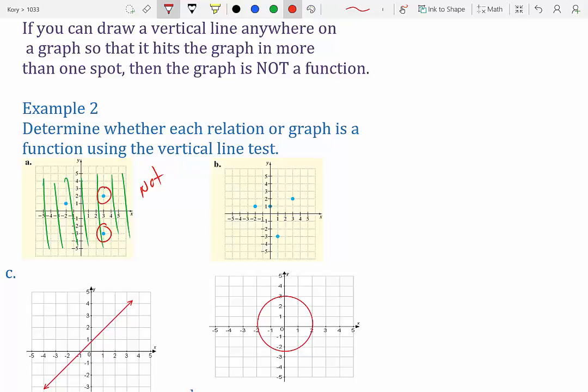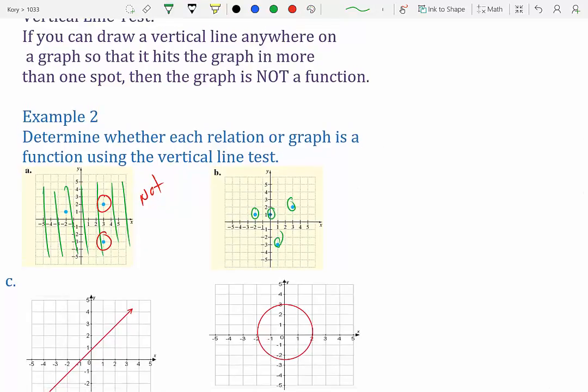Now for b, you necessarily don't need to do the vertical line test. You just need to see, are there any x values on top of each other? Do we have two x values that are the same? So for b, if we look at our x values, none of them are on top of each other. None of them are the same. So yes, it's a function.